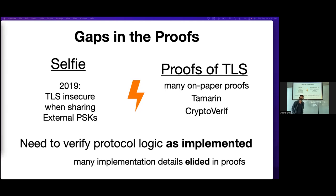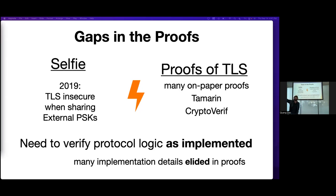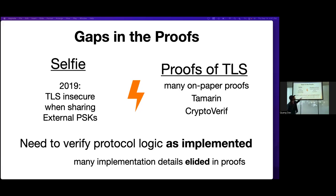If we don't verify protocol logic as implemented, we'll always miss critical security details and open ourselves up to new attacks. The external PSK is on the logic level — it's something that's allowed by the RFC for TLS, so every good implementation would do external PSK just as the RFC says. It turns out it's actually insecure because the RFC under-specifies how you can use external PSK. This was not captured by those proof papers because they considered a model of TLS that did not include the external PSK feature.